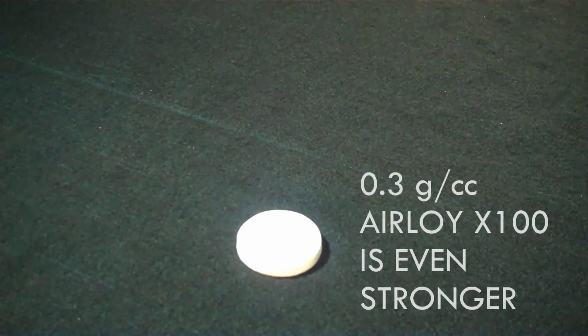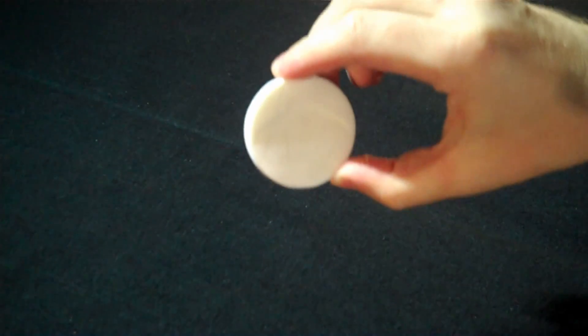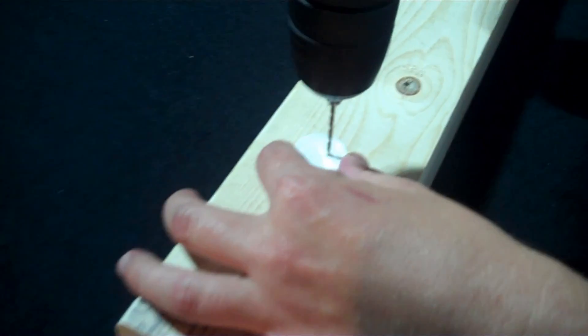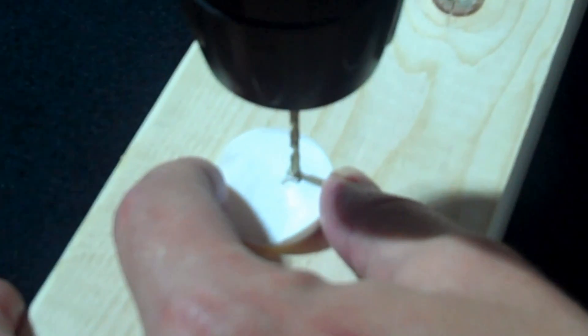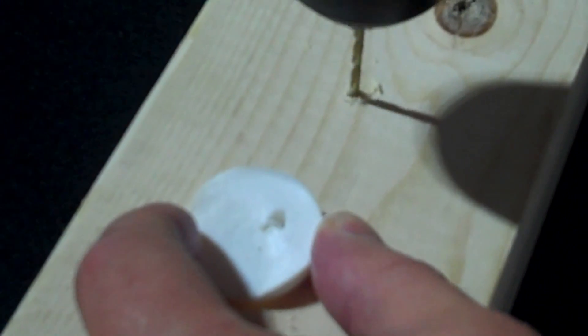These enhanced mechanical properties mean that airloys can be machined like any ordinary engineering material, unlike classic silica aerogels. Here I'll demonstrate taking the airloy disc and a drill, and you can see it's as easy to drill as any other engineering material such as wood.